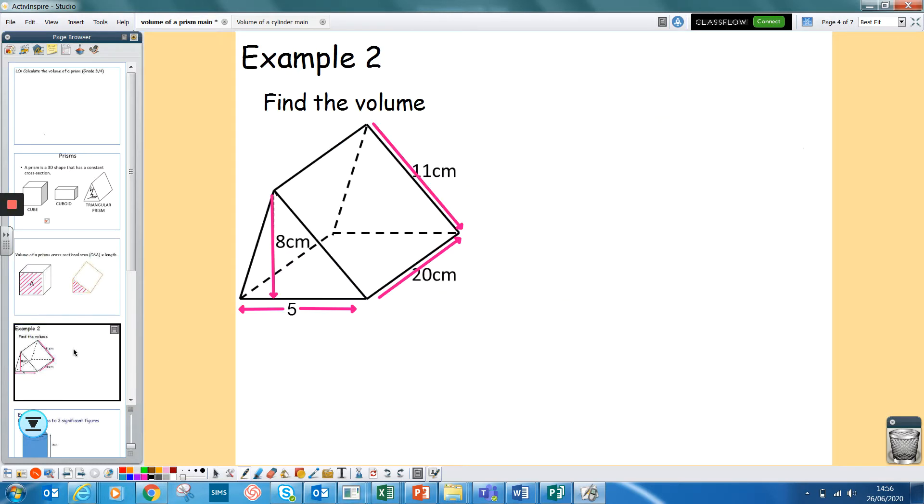So if we're looking at a triangular prism here, the cross section area is the triangle. So the first bit is my volume is my cross sectional area times by the length. My cross sectional area on this one is a triangle. So obviously your first bit is remembering the area of a triangle. Remember it's base times height divided by 2. So I've got my base at 5 times 8 divided by 2.